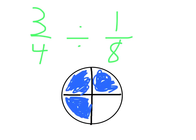So looking at the problem, three-fourths divided by one-eighth. Here we have a pizza that's carved into fourths. There are four pieces, and we have colored in, shaded in, three of them.